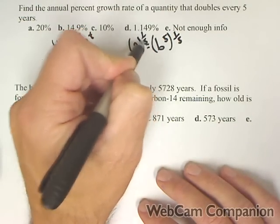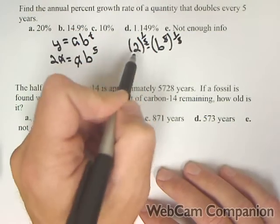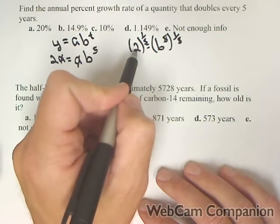So we're going to raise both sides to the one-fifth, and that gives us our base of 2^(1/5).